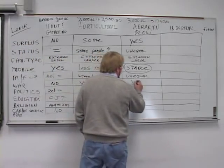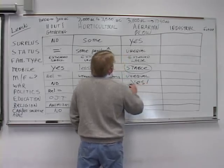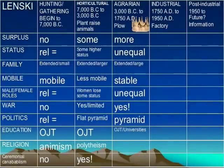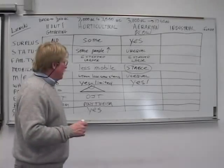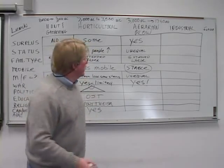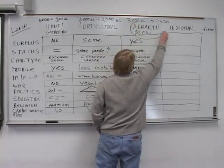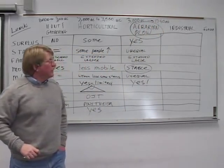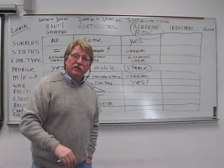War became extremely common. Why? Because of the surplus. Constantly trying to take over somebody else or they're trying to take you over, you're trying to protect them. So when you go to a history course, and we've got some great ones at this college, you're going to hear a great deal about one war after the other, because what they're studying is not human society in general. They're studying the agrarian era and the early industrial era.